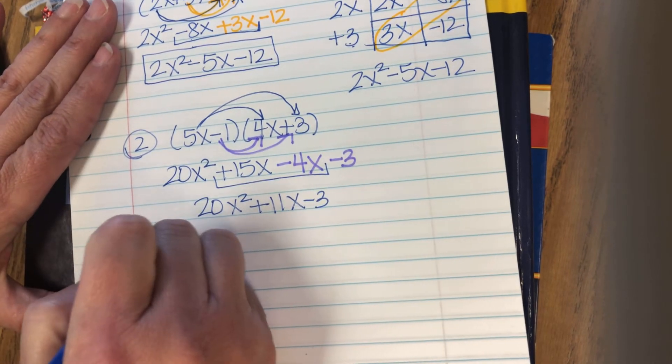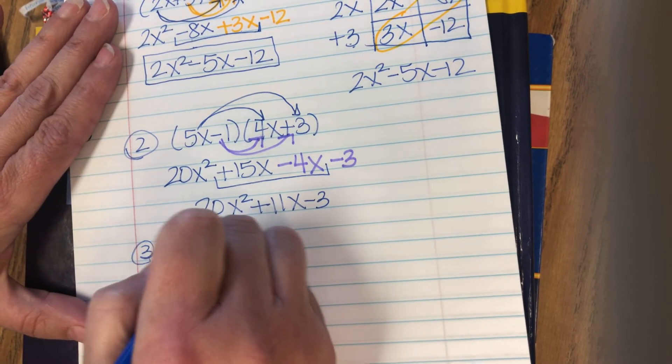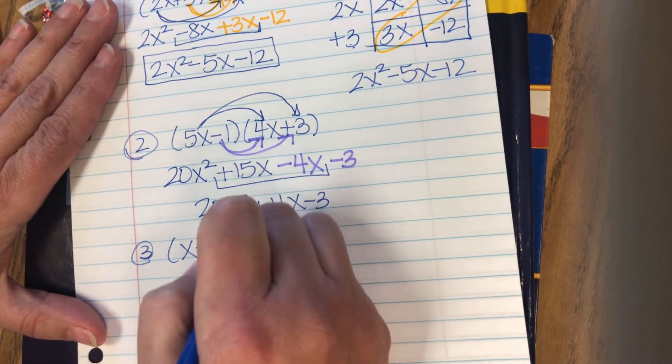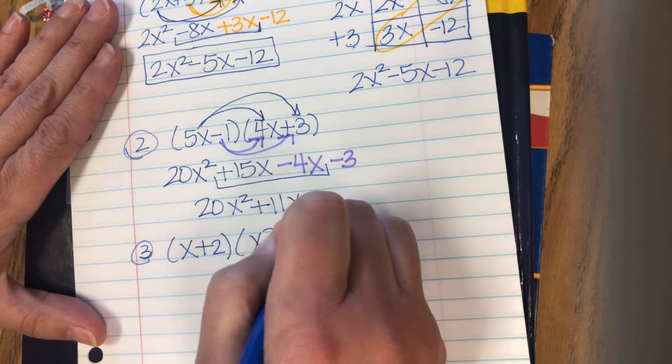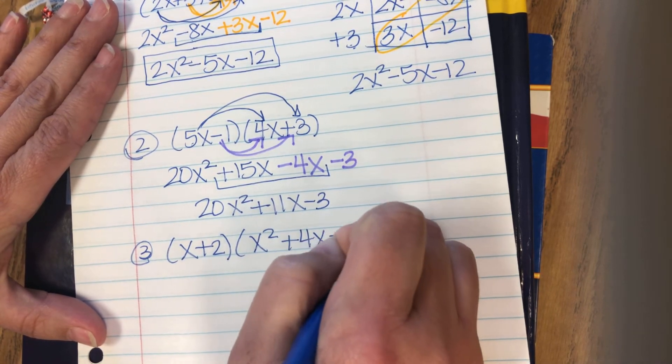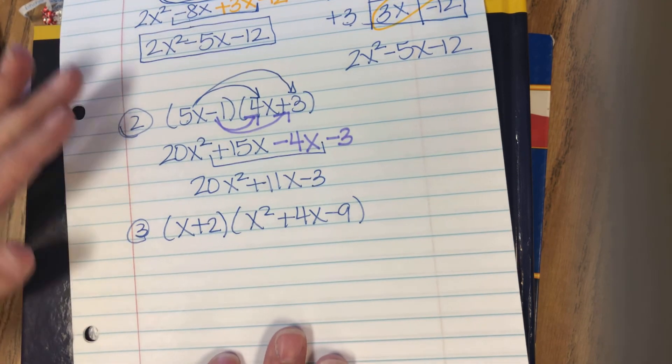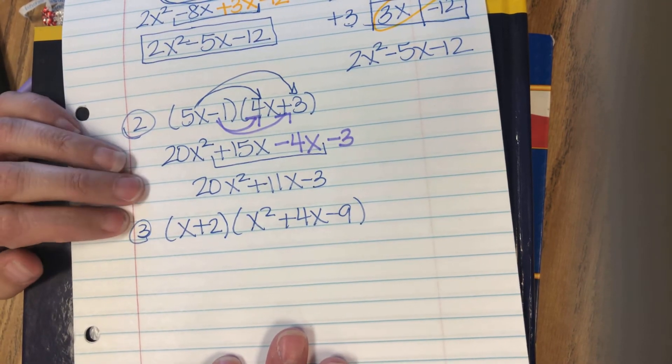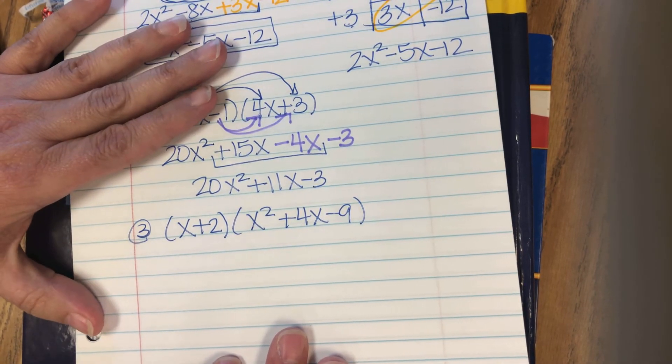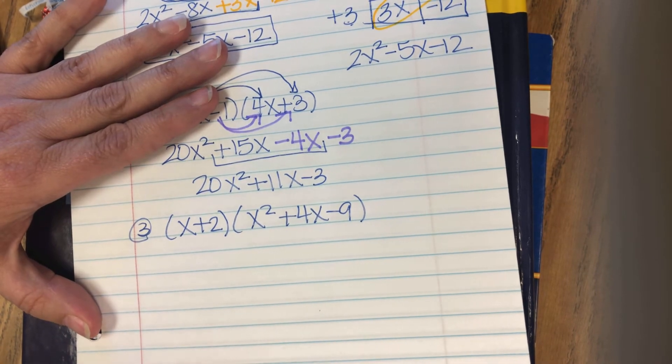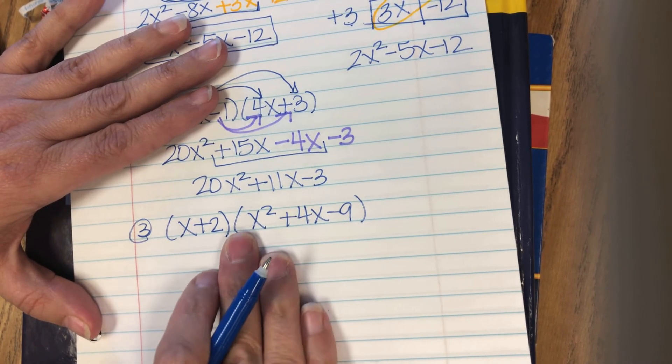So let's try one more problem. Number 3. We're going to do x plus 2 times x squared plus 4x minus 9. So this one's a little bit different. It's got x squared in it.